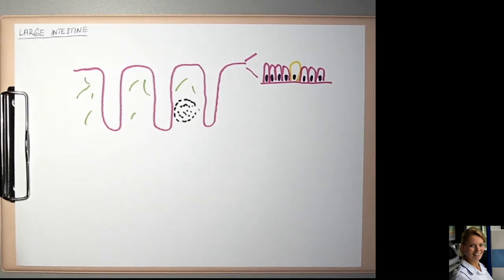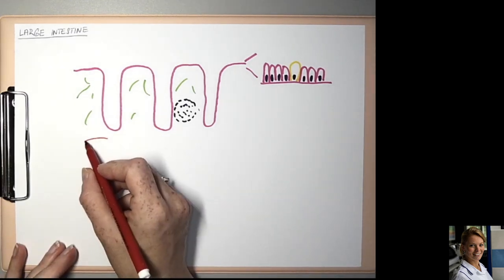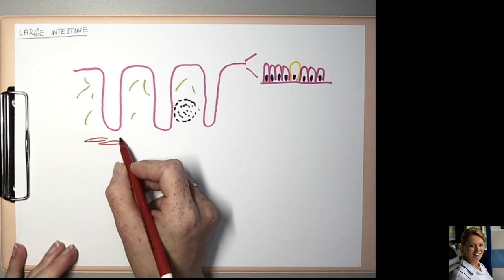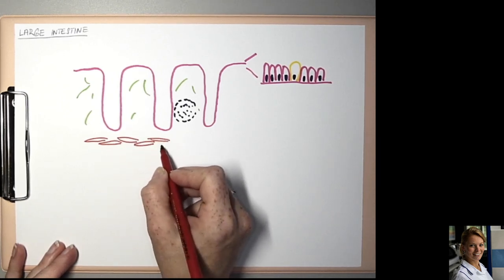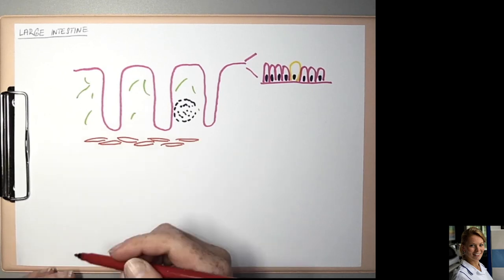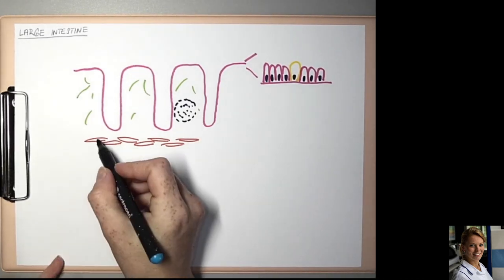And the last layer of mucosa is the lamina muscularis mucosa, which is formed by smooth muscle cells and creates the border between mucosa and submucosa.